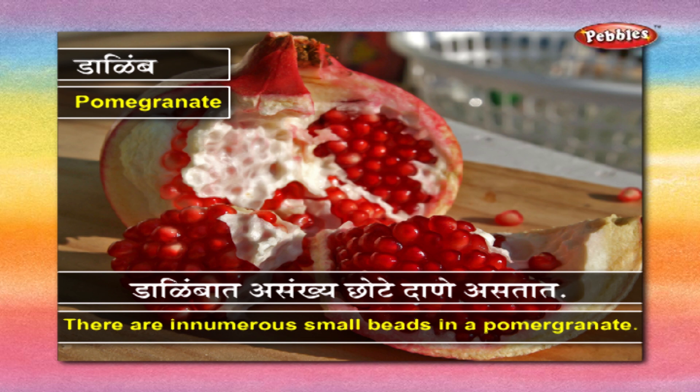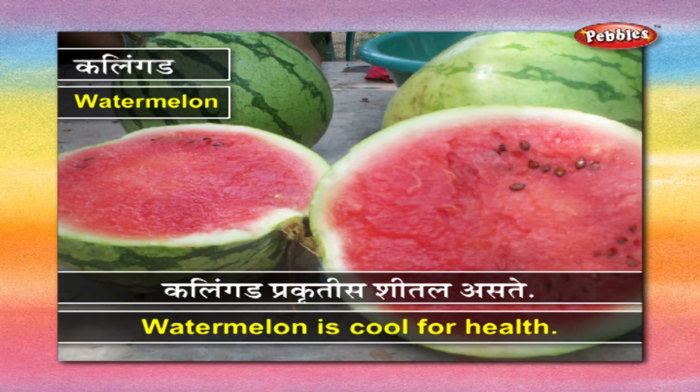डाळिंब - डाळिंबात असंख्य छोटे दाने असतात. कलिंगड - कलिंगड प्रकृतीस शीतल असते.